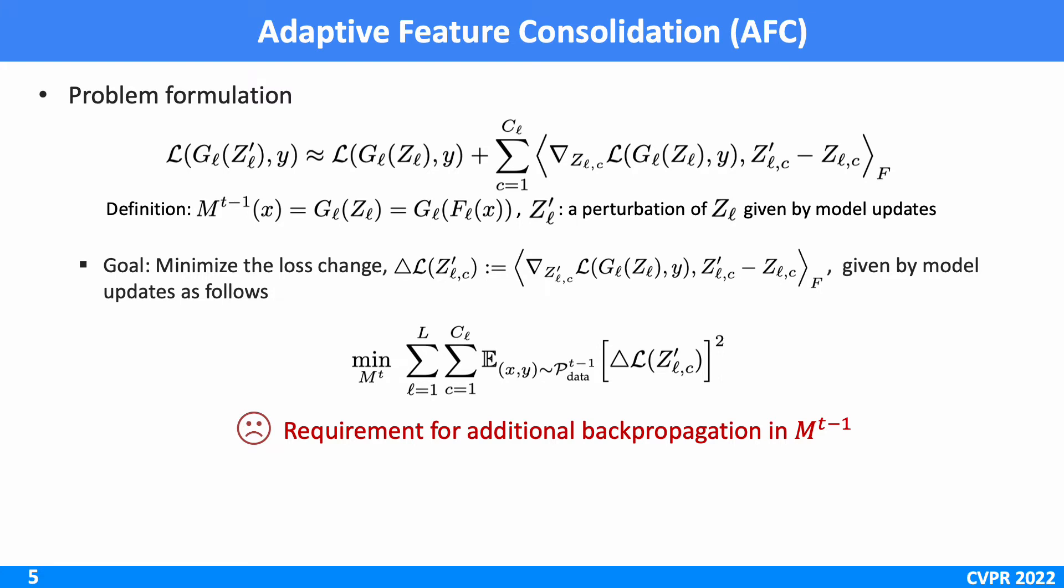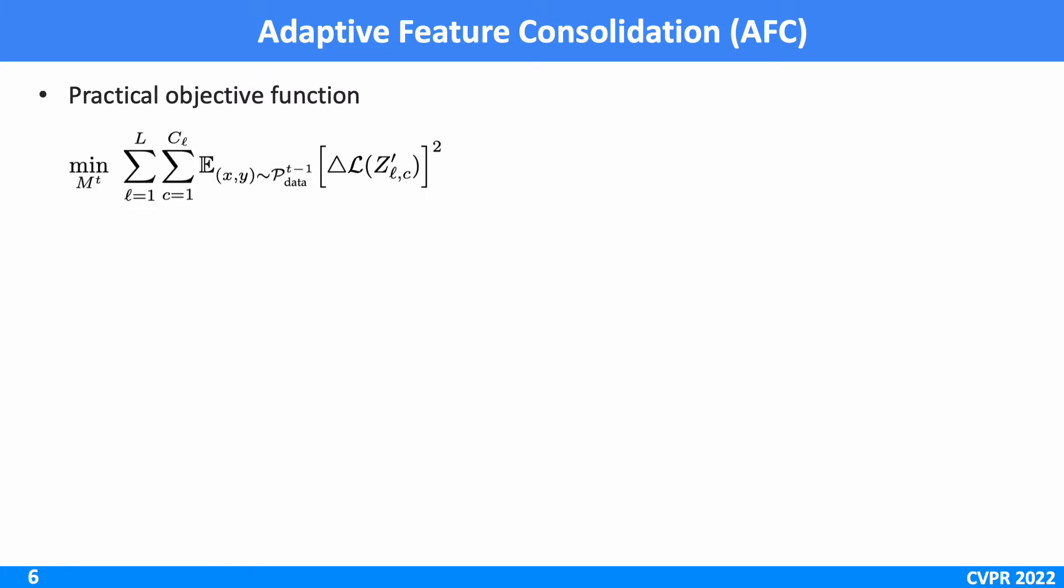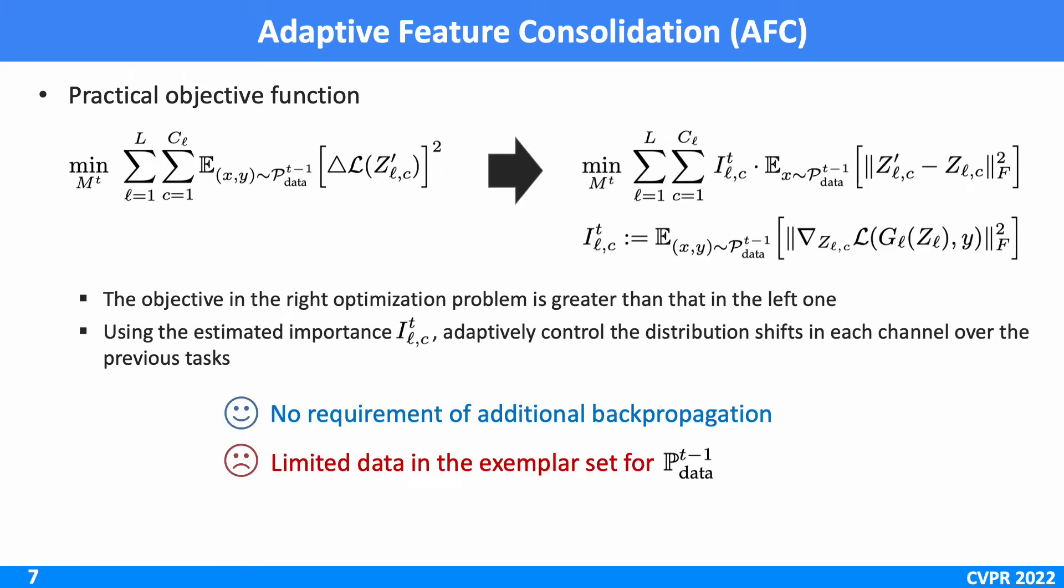However, to solve the optimization problem, we require additional computation for backpropagation through MT-1. To this end, we replace the optimization problem with the right one. Note that the objective in the right optimization is greater than that in the left one.